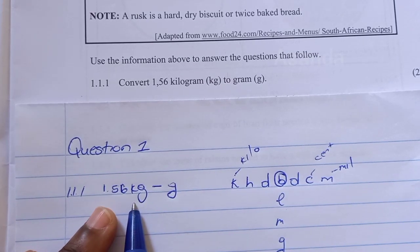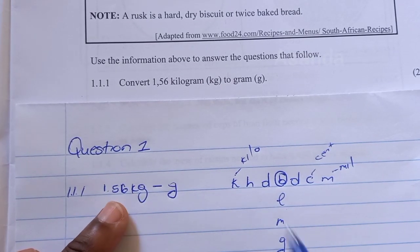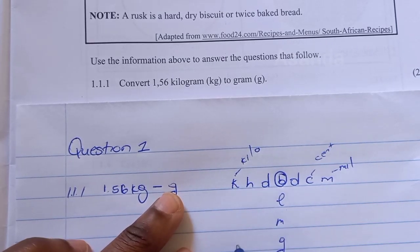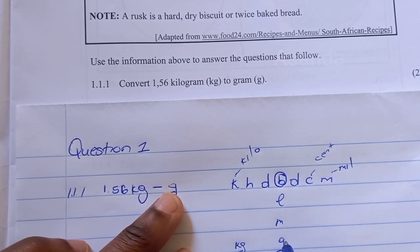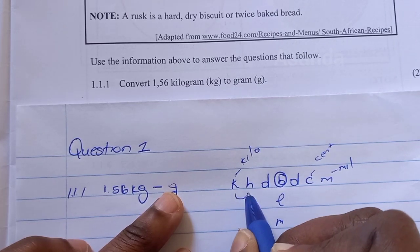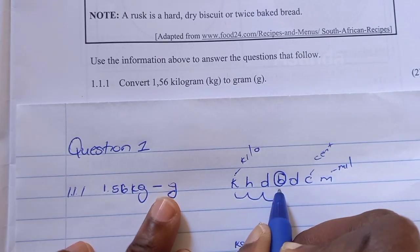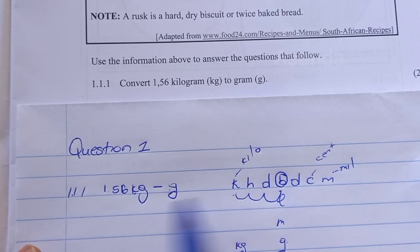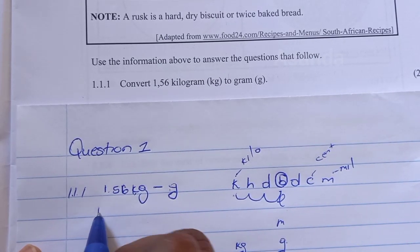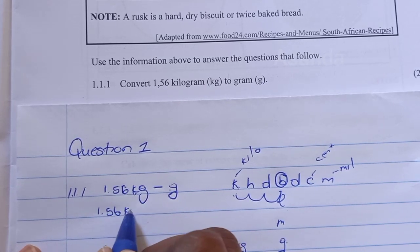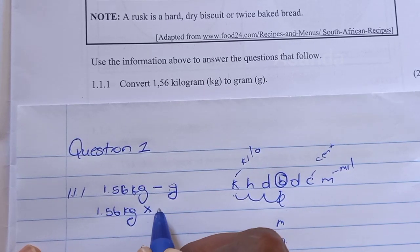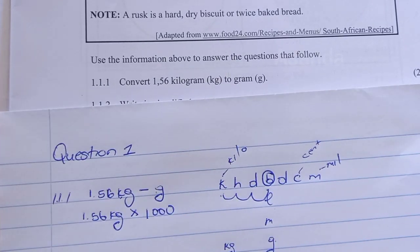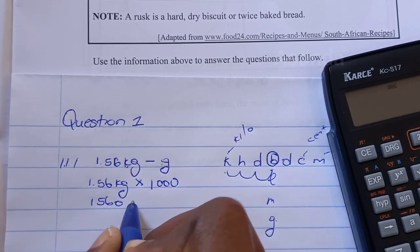This question says we must convert from kilograms to grams. We're going to move 1, 2, 3. That means we are going to use three zeros. Kilograms to grams is from the biggest to smaller, so we're going to multiply. We're going to say 1.56 kilograms multiplied by 1,000, and we get 1,560 grams.